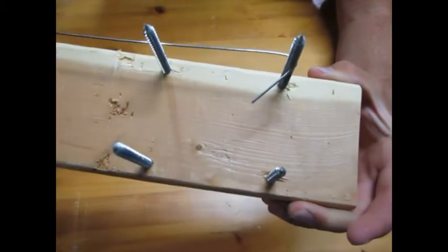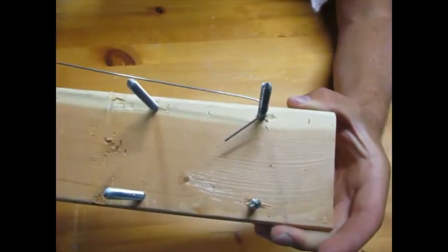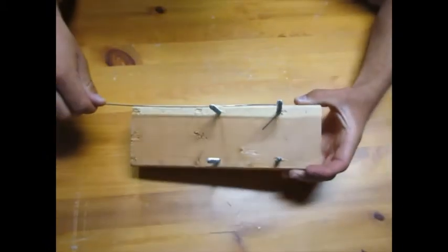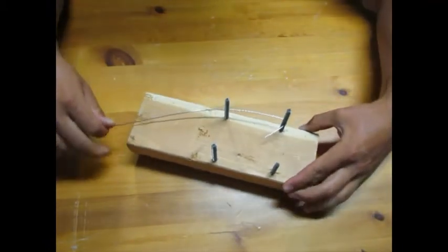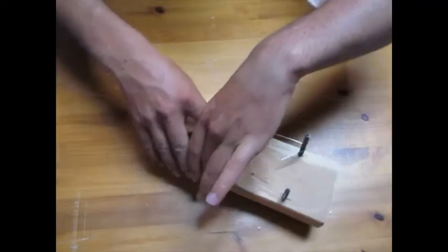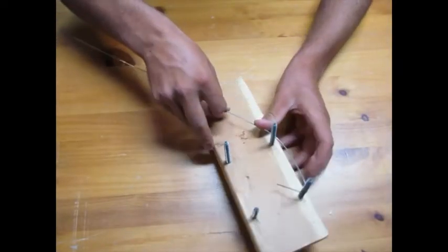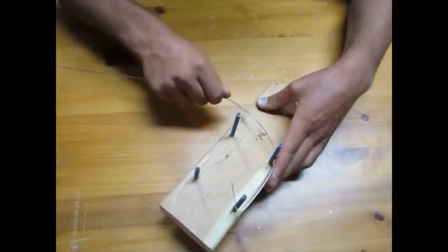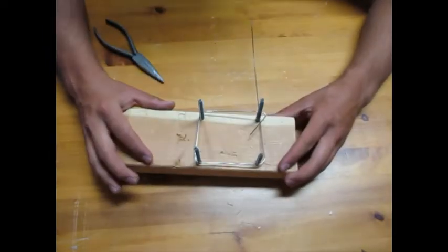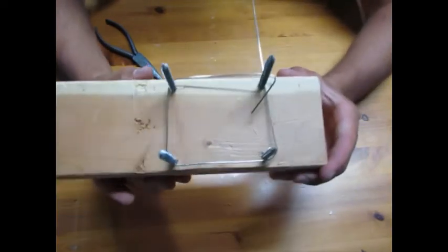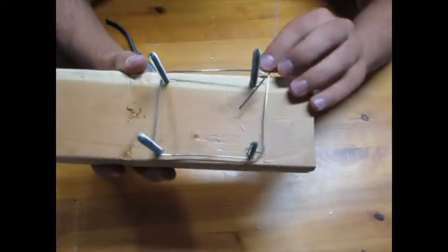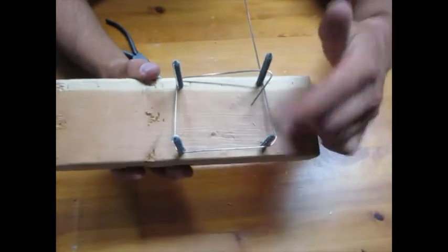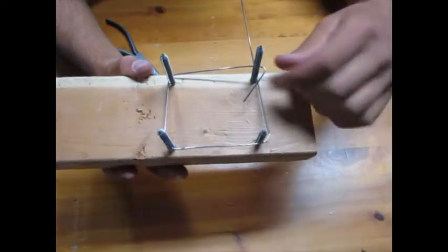From there you go ahead and just kind of keep wrapping it around each one to create the frame of the roof rack. Alright there we go, so that definitely took some mangling to get quite right, but we have this bent all the way around each one of these screws so we're ready to move on to the next step.